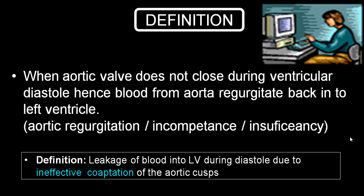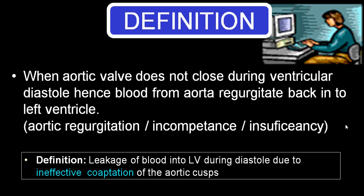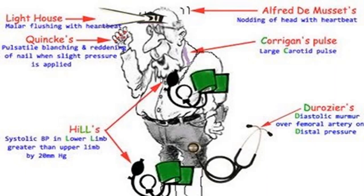This slide shows some of the signs. Lighthouse sign is a malar flushing with each heartbeat — the malar part of the face shows flushing. Quincke's sign is a blanching of capillary pulsation seen in the nail bed because of increased wide pulse pressure. Alfred De Musset sign is a nodding of the head with each heartbeat.